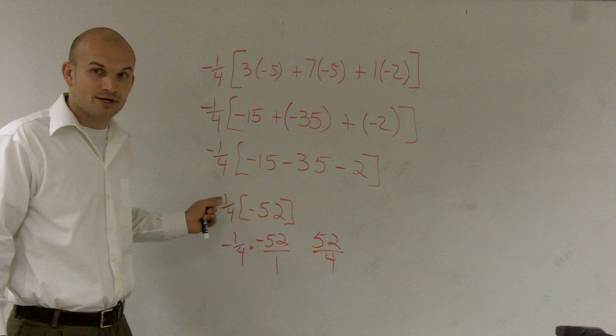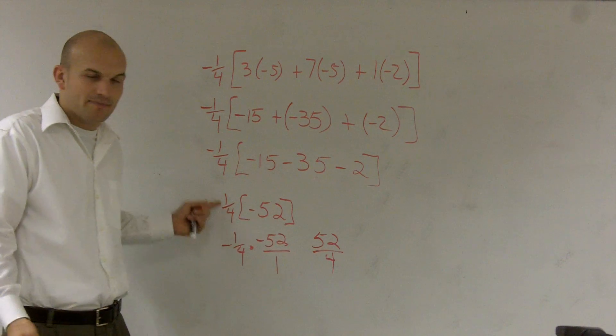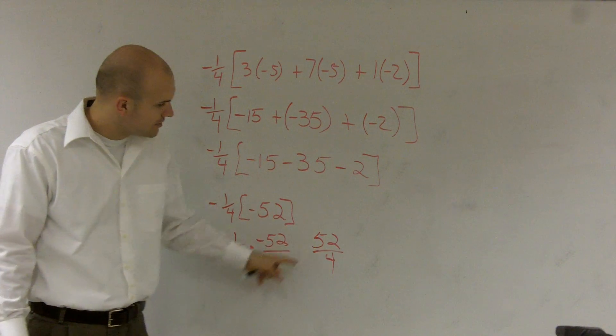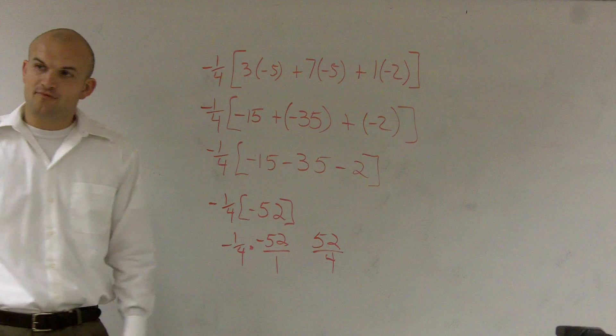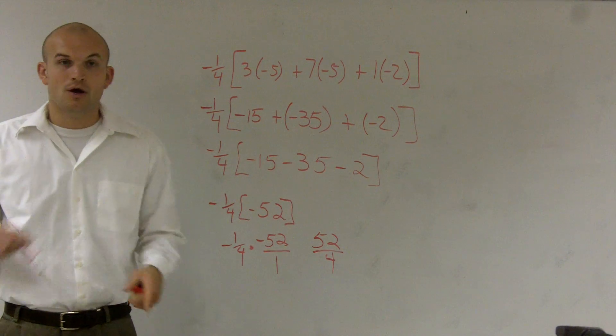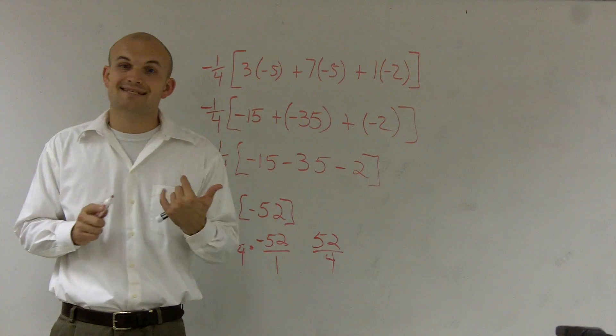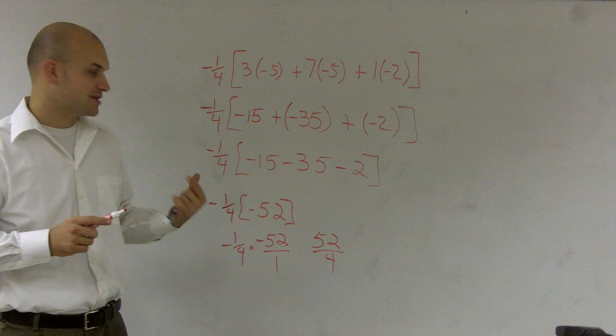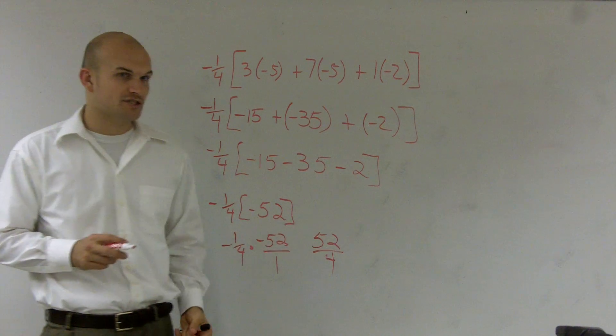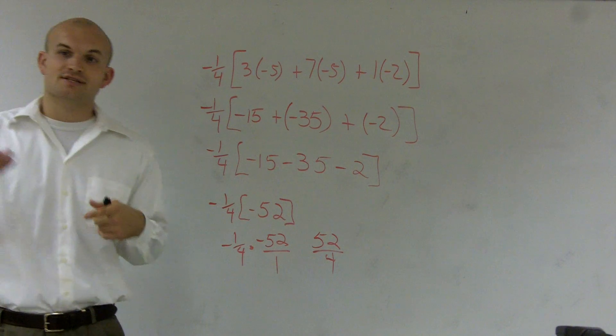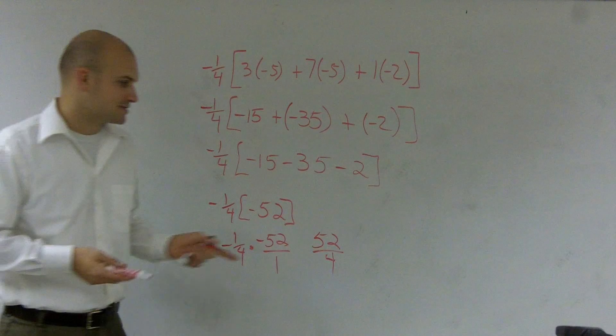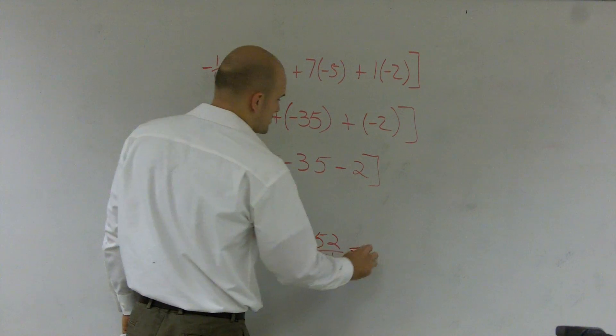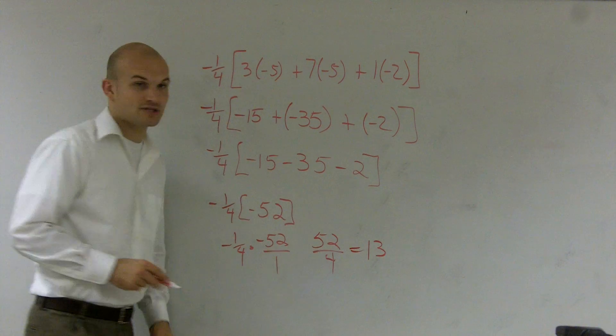So 52/4 is the same as 52 divided by 4. How many times does 4 go into 52? 4 goes into 40 ten times, with a remainder of 12 to get to 52. And 4 goes into 12 three times, so 10 plus 3 gives me 13. The final answer is 13.